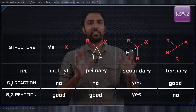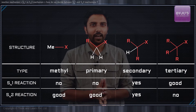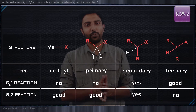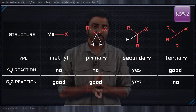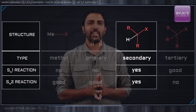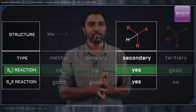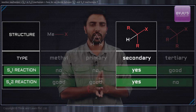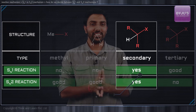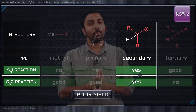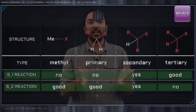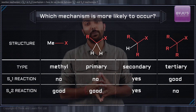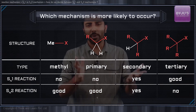Now let us bring back a table to compare the effect of simple variations in structure on the feasibilities of SN1 and SN2 reactions. As you can see from this table, the secondary alkyl halides can react either by the SN1 mechanism or the SN2 mechanism, but in both cases the yield happens to be poor. So if we are given a substrate and asked to determine which mechanism is more likely, how do we go about that?